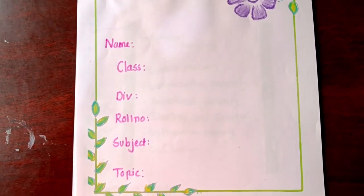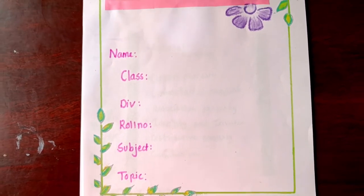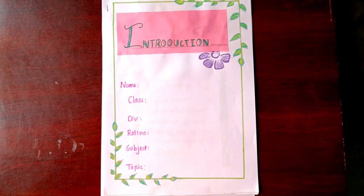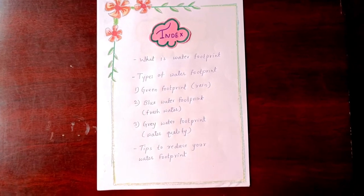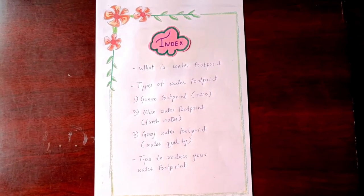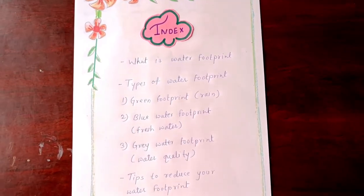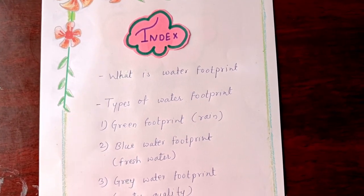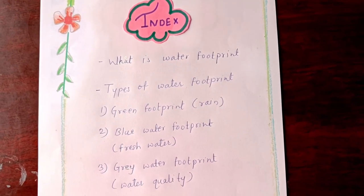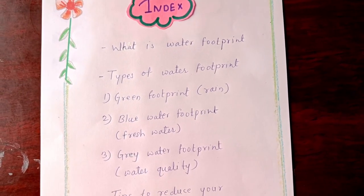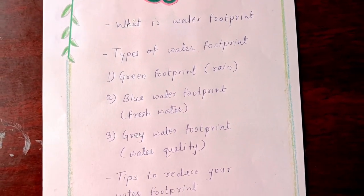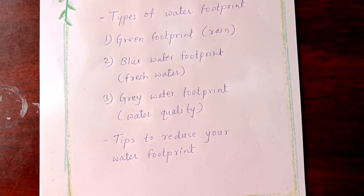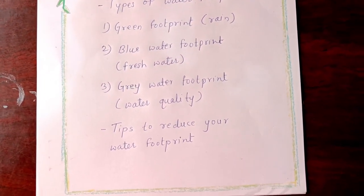The second page is the index. It covers: what is water footprint, types of water footprint — number one green footprint that is rain, then blue water footprint that is fresh water, and the third one is grey water footprint that is water quality — and the last one is tips to reduce your water footprint.